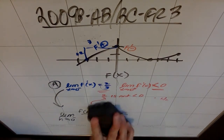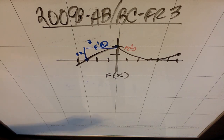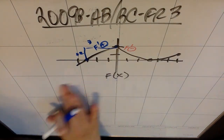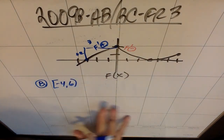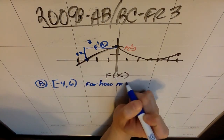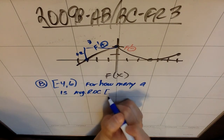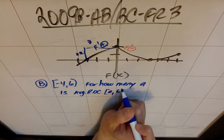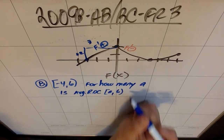Part B: For how many values of A from negative 4 (included) to 6 (not included) is the average rate of change of f on the interval from A to 6 equal to 0? Give a reason for your answer. Average rate of change is just old school slope. They're asking: how many times can you pick some number A such that drawing a line from the y-value at A to the endpoint at 6 gives you a horizontal slope?